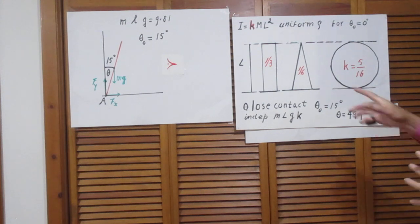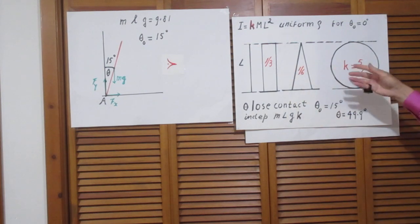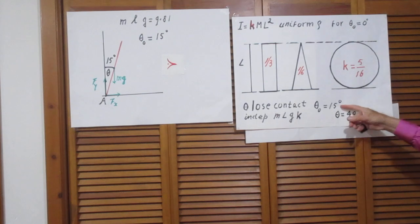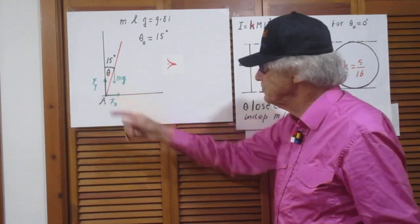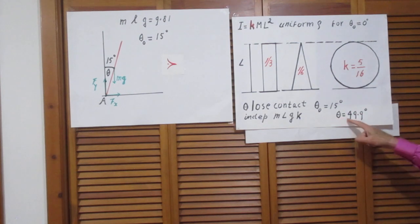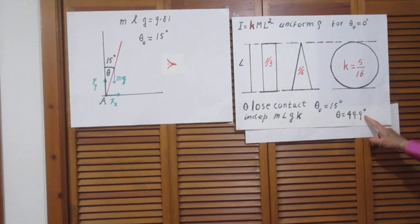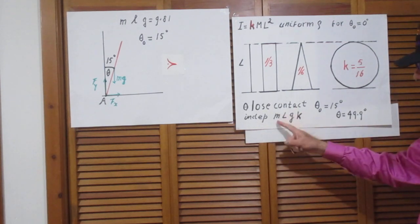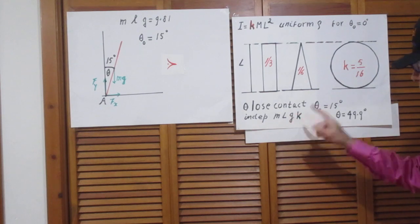So, all these objects, if you offset them by an angle of 15 degrees like here, all of them will lose contact with the wall when theta is 49.9 degrees. That is independent of N, of L, of G and of K.